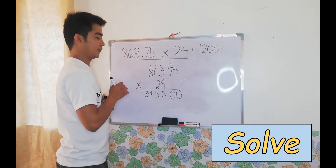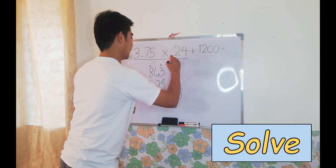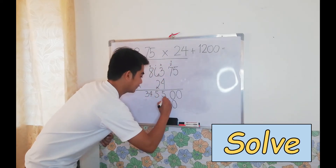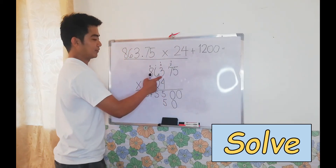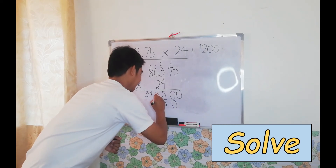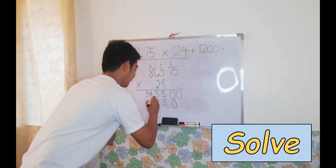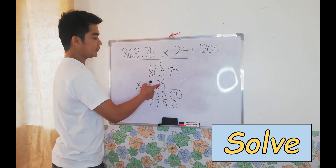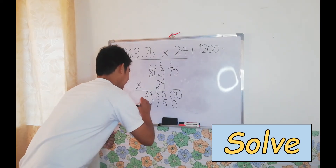Now for the second partial product: 2 times 5 equals 10 — write 0 ones and regroup 1 ten. 2 times 7 equals 14, plus 1 equals 15 — write 5 ones and regroup 1 ten. 2 times 3 equals 6, plus 1 equals 7. 2 times 6 equals 12 — write 2 ones and regroup 1 ten. 2 times 8 equals 16, plus 1 equals 17.